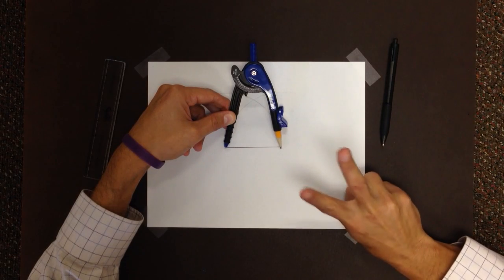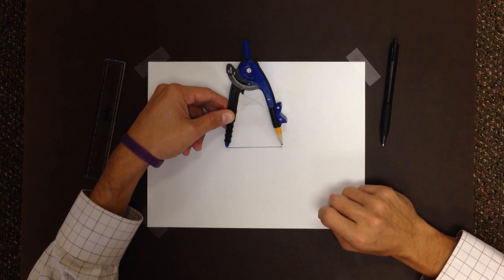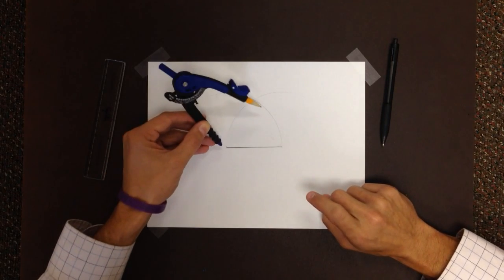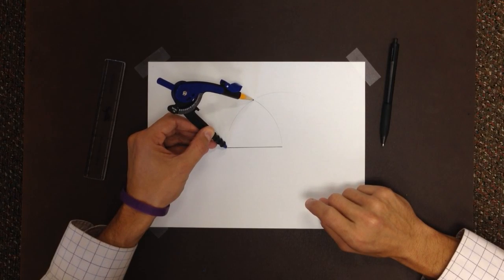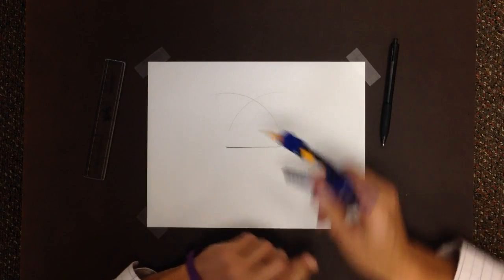We want to construct two other sides that are the same length. Well, the distance from the intersection to this point is going to be that distance. And so is this one.